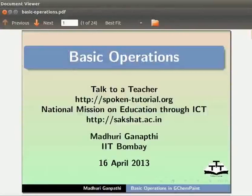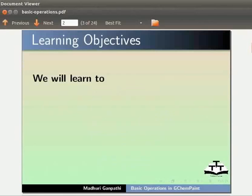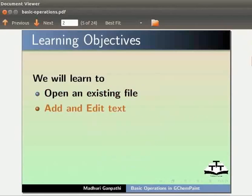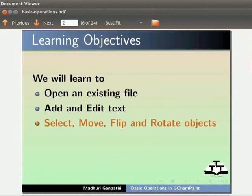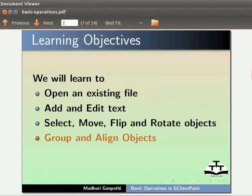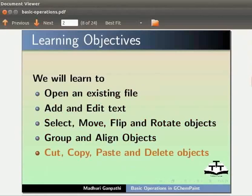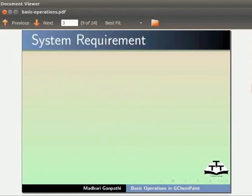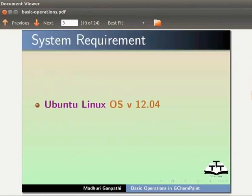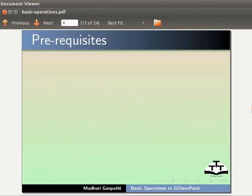Hello everyone. Welcome to the tutorial on basic operations in GChemPaint. In this tutorial, we will learn to open an existing file, add and edit text, select, move, flip and rotate objects, group and align objects, and cut, copy, paste and delete objects. Here I am using Ubuntu Linux OS version 12.04 and GChemPaint version 0.12.10.